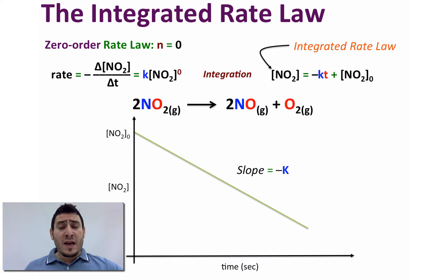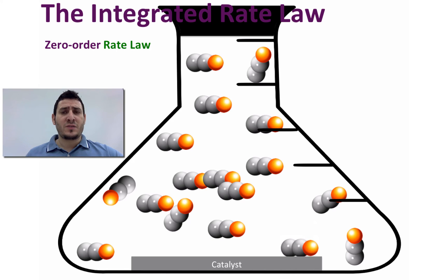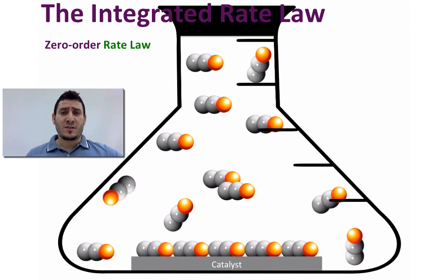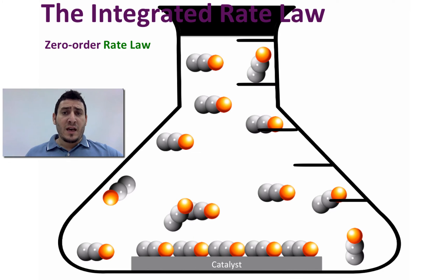How would a reaction be independent of the concentration of a reactant? Consider a catalyst where the reaction happens only at the surface. No matter how much you increase the concentration of your reactants, if the total surface of the catalyst is occupied, no more molecules can be deposited on the surface to react, and therefore the rate will be constant with time.